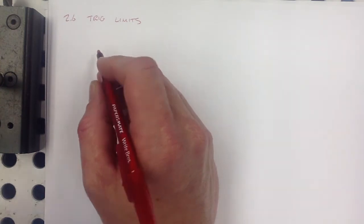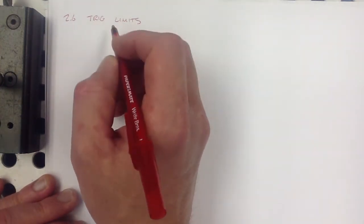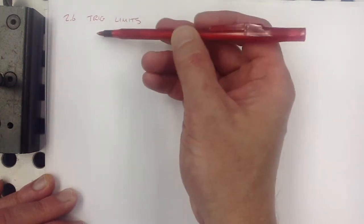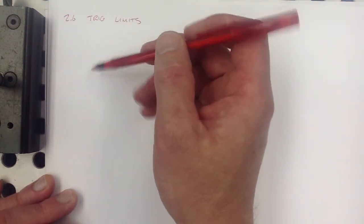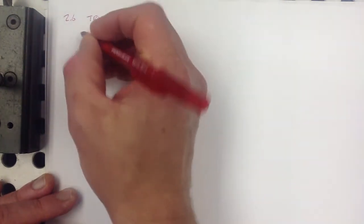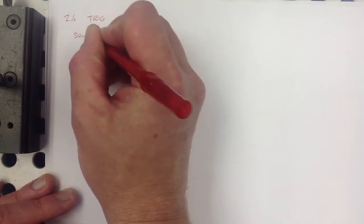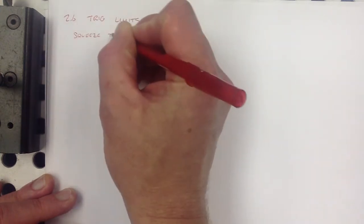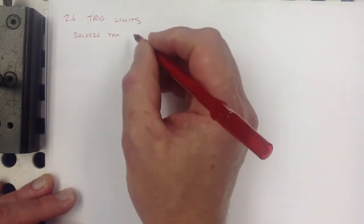There are some situations in calculus where we will prove something, but the proof is really a means to an end, and it's the end that's important. This is one of those cases. There is something called the squeeze theorem, sometimes called the sandwich theorem.